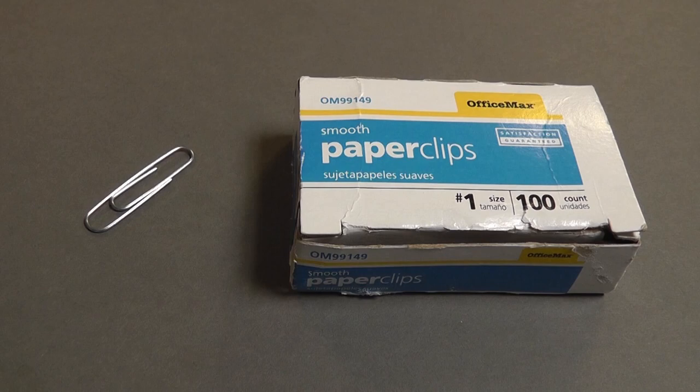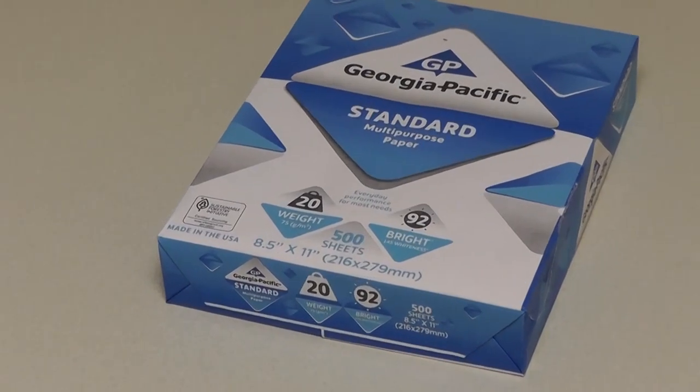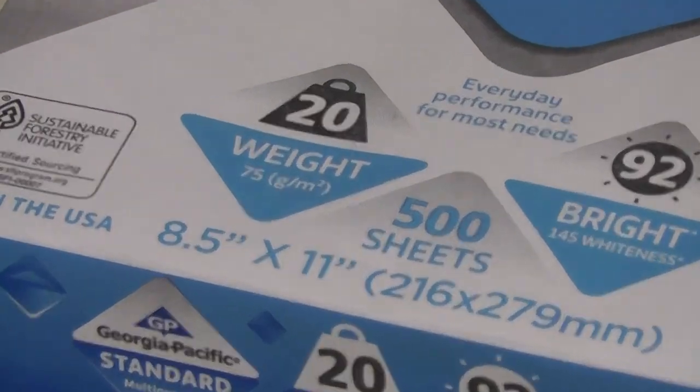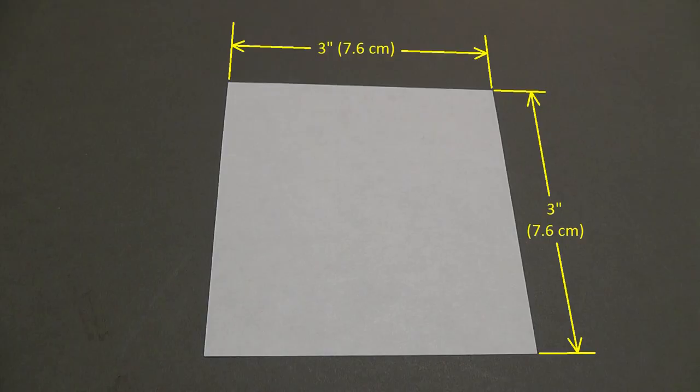You'll need a standard number one paper clip and some 20 pound or 75 to 80 GSM bond paper. The paper needs to be cut into a flat 3 inch or 7.5 cm square.